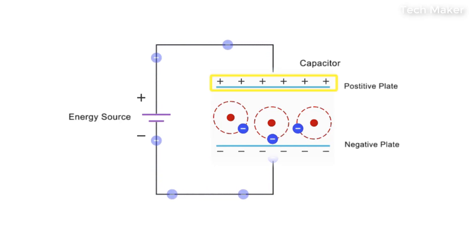As charge accumulates on the positive plate, the electrons of the dielectric material gravitate toward the positive plate, distorting their orbits.